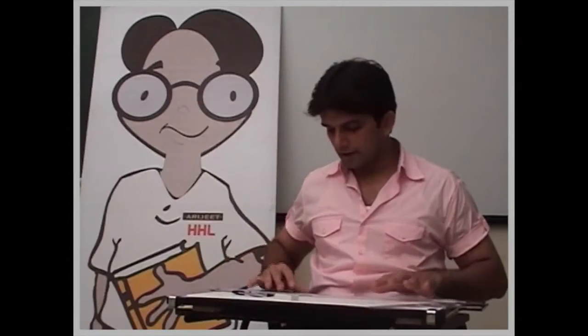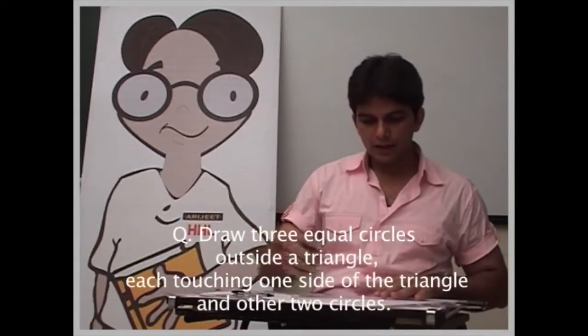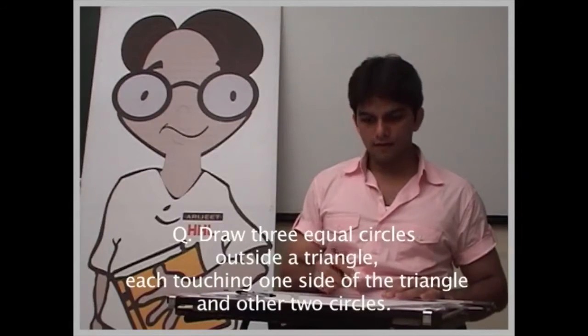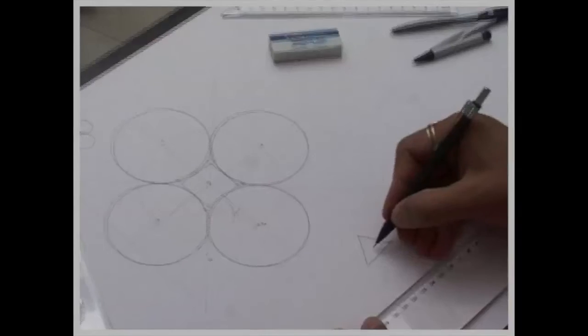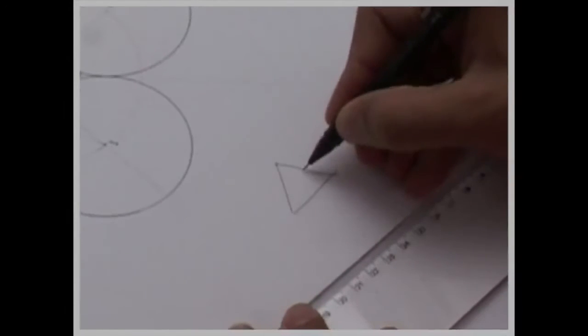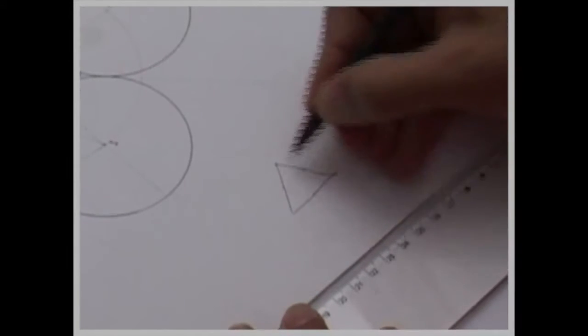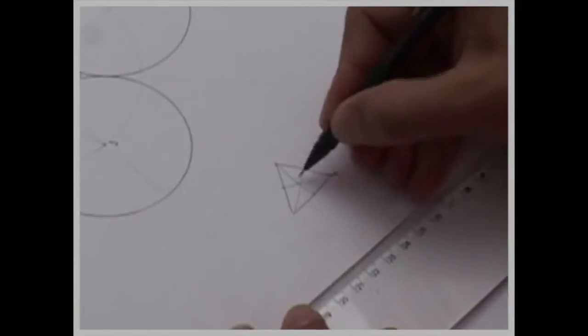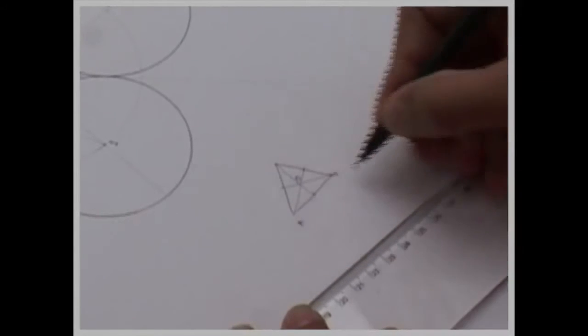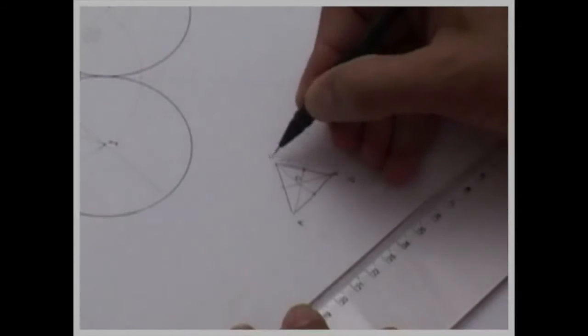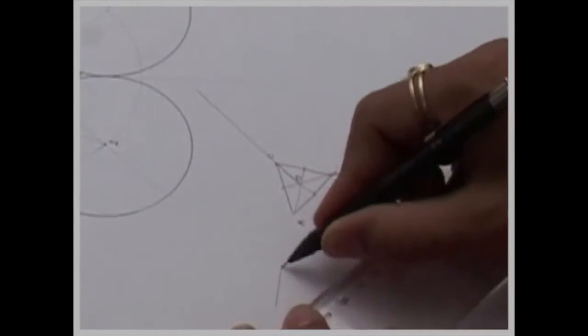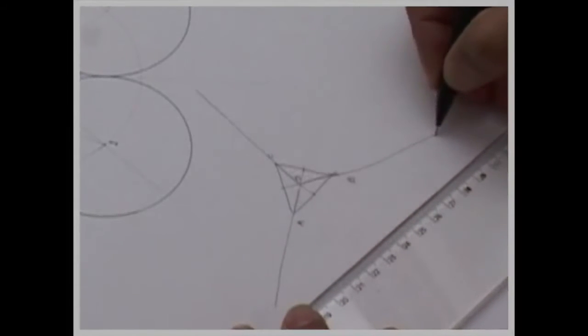Now what we have done with square, now same thing I can do it with triangle also. Now in this case, first you draw a triangle of required size and you find out midpoint of all the sides. You get O, A, B and C. You extend line OC, OA, OB.